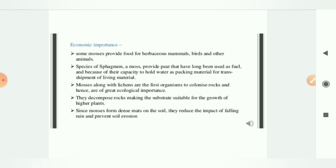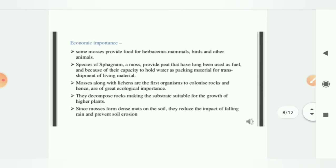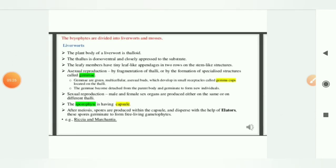Also, mosses along with lichen are the first organism to colonize rocks and hence are of great ecological importance. Then they decompose rocks, making the substrate suitable for the growth of the higher plant. And lastly, they also form dense mat on the soil, which reduces the impact of falling rain and prevent soil erosion.